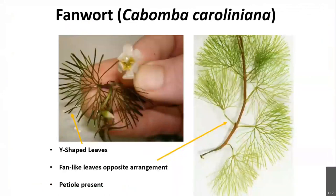Fanwort is a submerged aquatic invasive plant native to South America and southern portions of the United States. It has the capability to grow dense populations that reduce biodiversity and impede recreation, and is easily spread by boats. Look for leaves that look like a fan — hence the name fanwort — where the leaflets have a Y-shaped fork at the end. The leaves are oppositely arranged and attached to the stem by a long petiole.